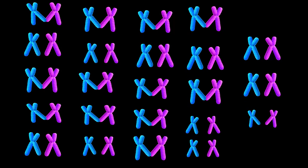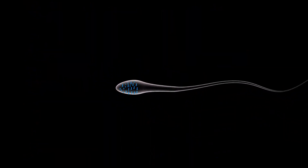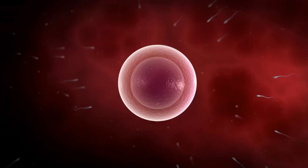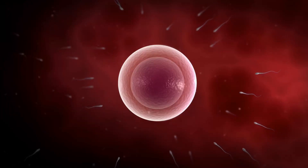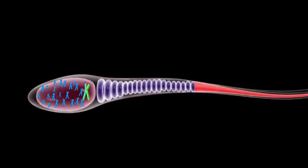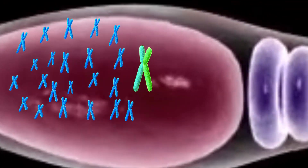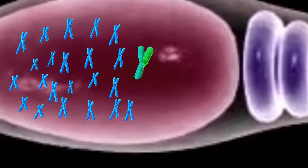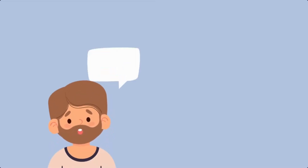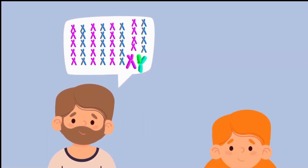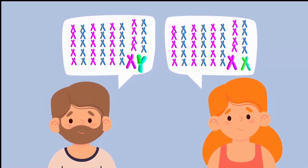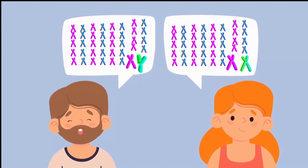You inherited another 23 chromosomes from your dad through the sperm that made you. This sperm had to conquer tremendous obstacles and competition in order to reach the egg. For your sex chromosome, the sperm can carry either an X or a Y chromosome. If you are male, you inherited a Y chromosome, and if you are female, you inherited an X chromosome from the sperm that came from your father.